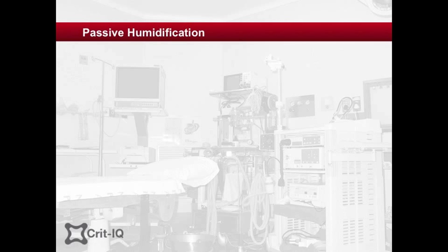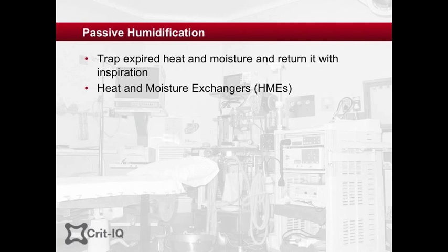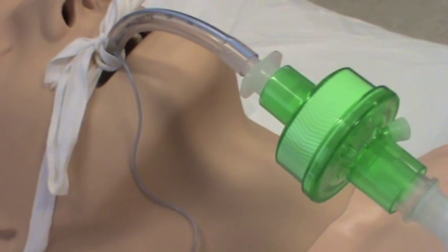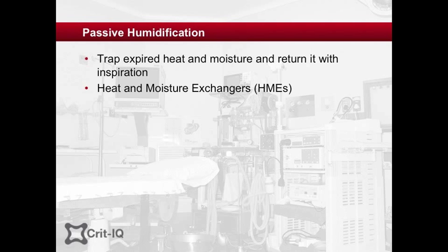Passive methods involve the insertion of a specialised filter that traps heat and moisture from the exhaled breath and returns it to the inhaled air mixture as it passes through the filter. These devices are known as heat and moisture exchangers, or HMEs. These have been designed to fit into the circuit as shown here, or for use on a tracheostomy tube in a spontaneously ventilating patient. The latter is known as a Swedish nose.